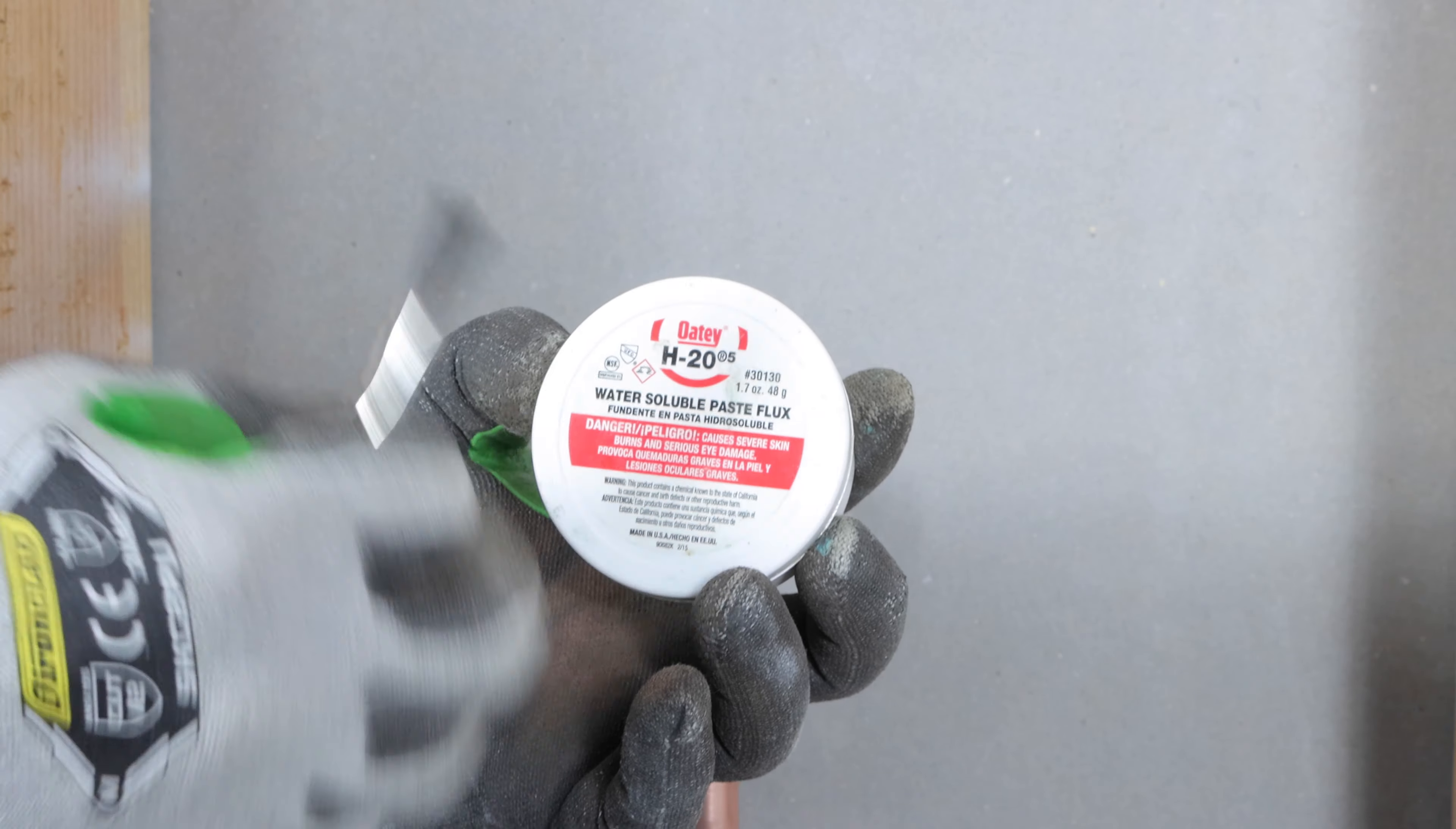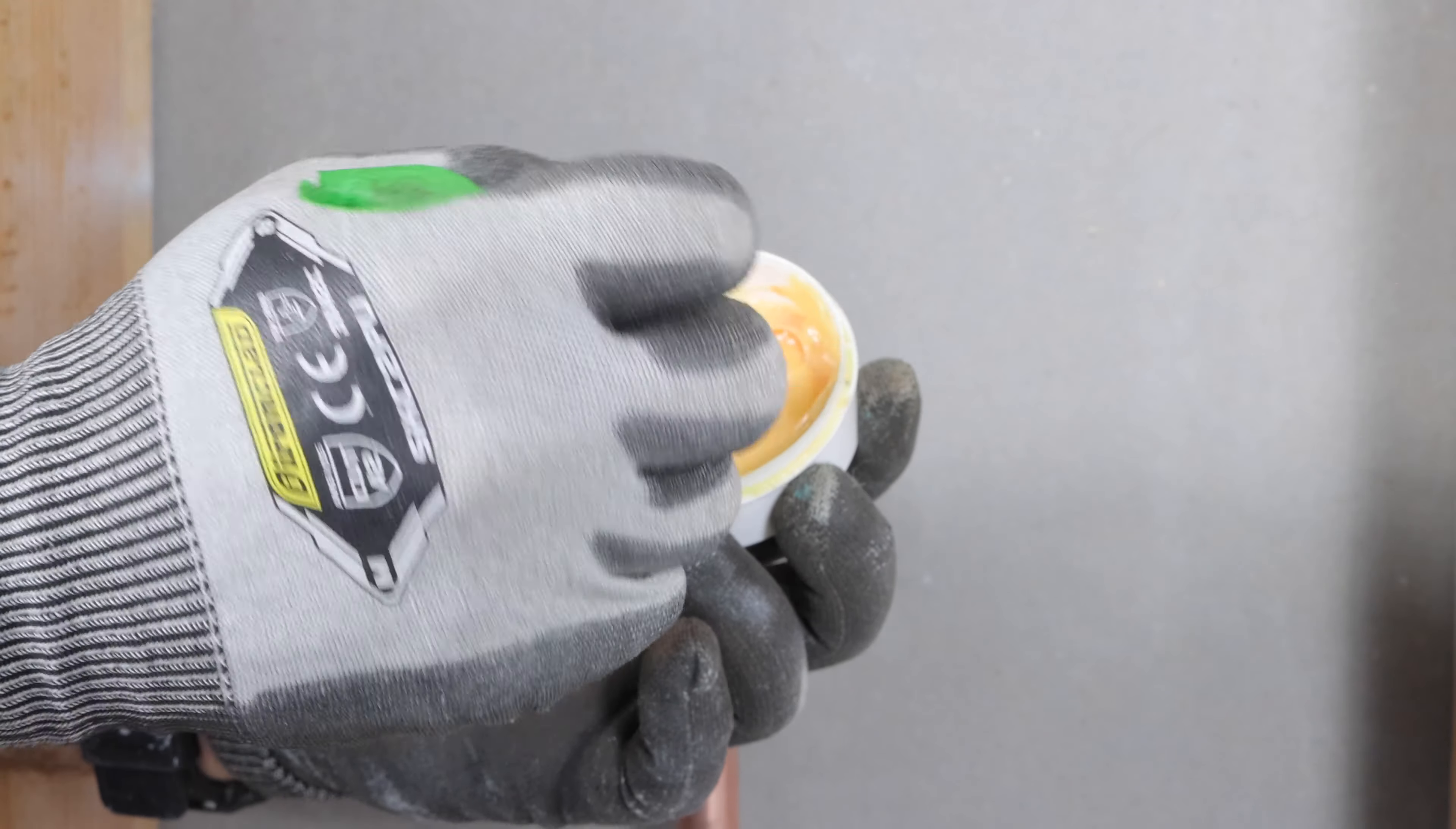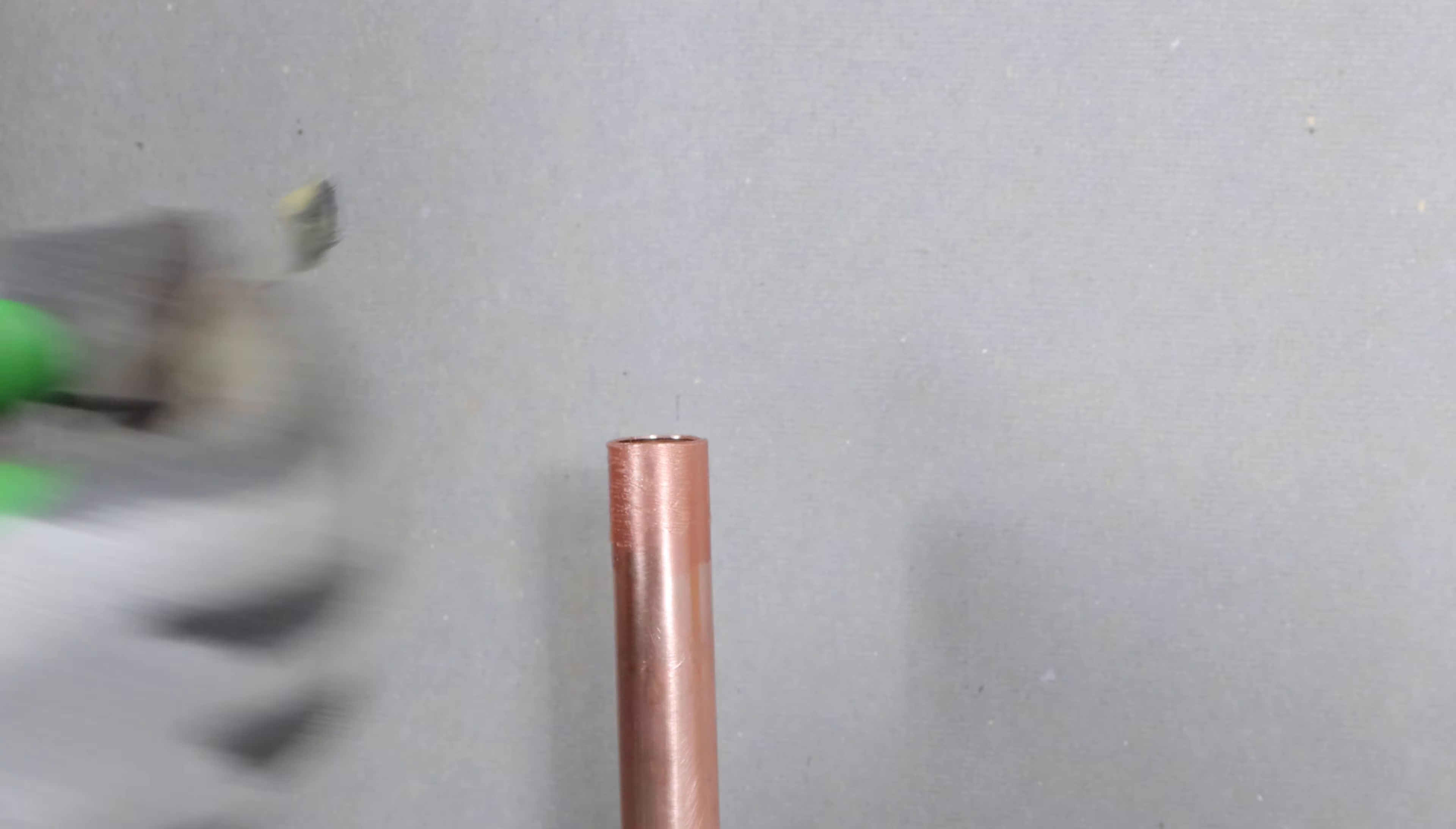Then I recommend using Odie H2O water-soluble flux. I mix that up really well in case the salts settle to the bottom of the container. And the reason why I like this is you can use it and you don't have to flush out your system unlike with other flux.